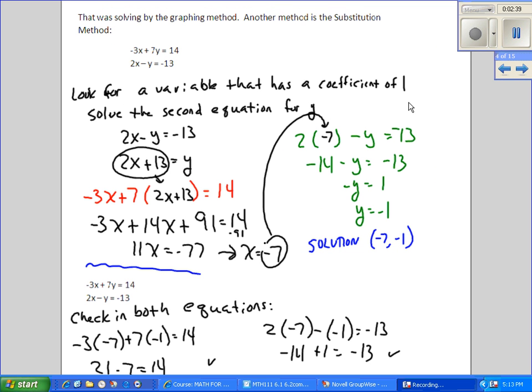That was the graphing method. Another method is the substitution method. And that's where we solve one of the equations for one of the variables and substitute it into the second equation. So for this particular system, we decided to solve the second equation for y. And the reason we chose that particular variable to solve for is because it has an understood coefficient of 1, which means we're not going to get into a bunch of fractions when we solve for the variable.